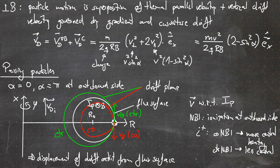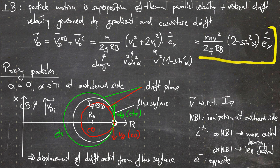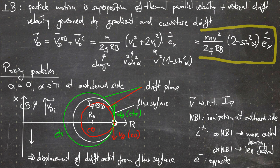Whereas injecting against the magnetic field — counter-NBI — is less central, and the deposition can happen at the vacuum vessel, which is undesirable. For electrons, it's the opposite, because looking at the drift equation, the electron charge makes the drift velocity point downwards instead of upwards.